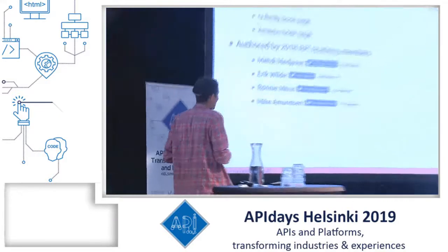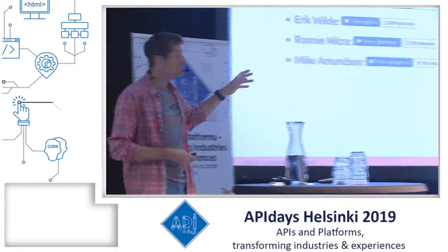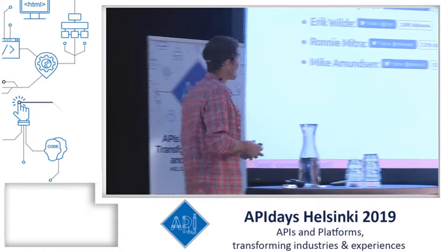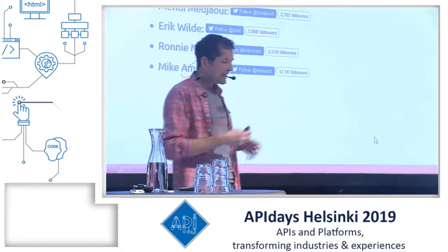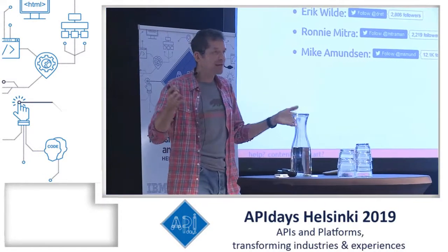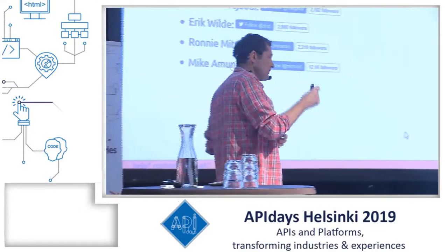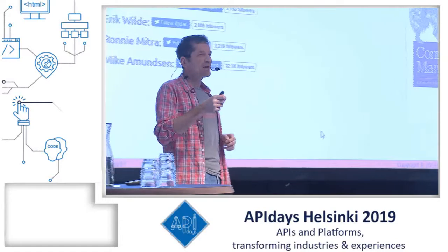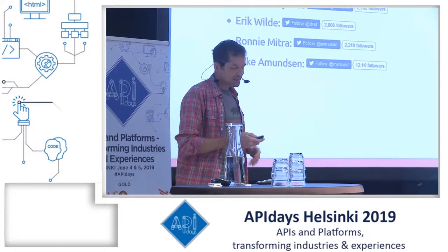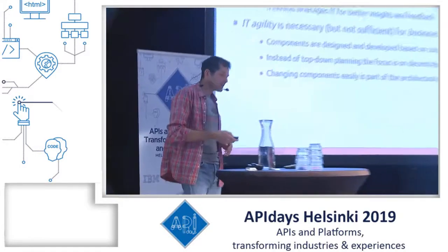As part of my previous life at the API Academy, we wrote a book. It came out last December and it's called Continuous API Management. The four most active members of the Academy — Maddie, myself, Ronnie, and Mike — wrote it. Our goal was to set the stage in terms of what's important to think about when you do APIs and manage large API landscapes. And one of those important things is loose coupling, which is what I want to talk about today.